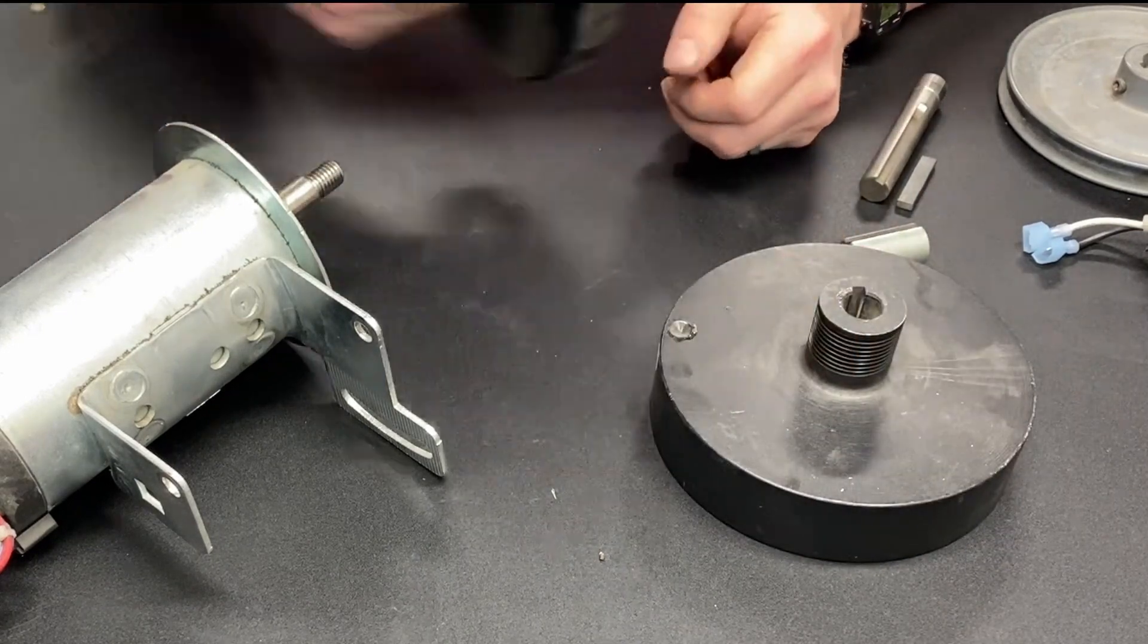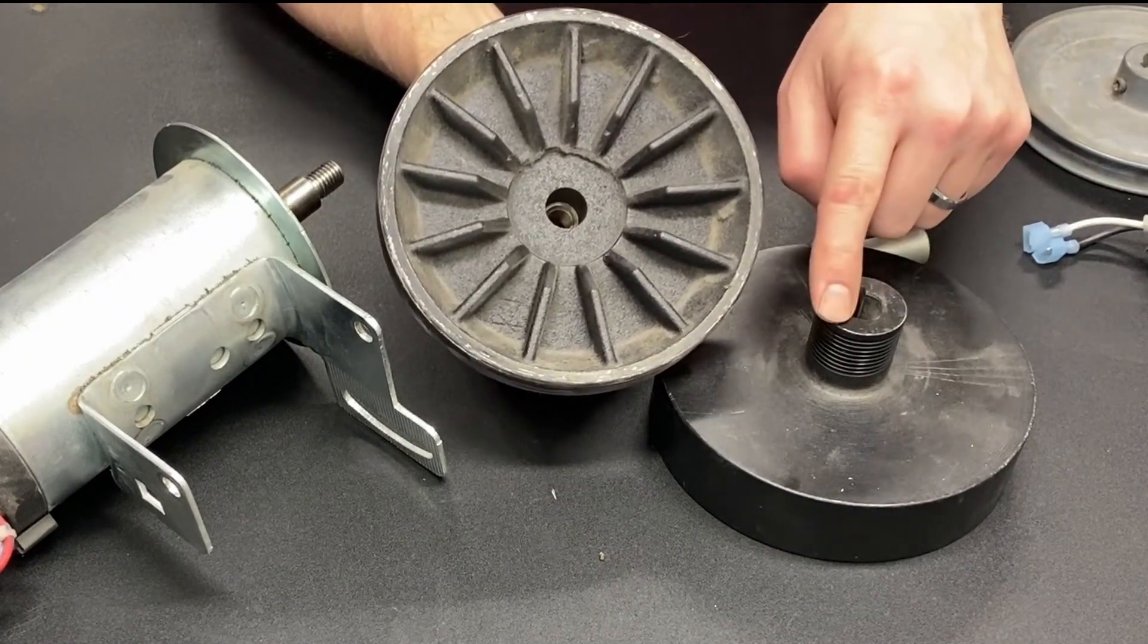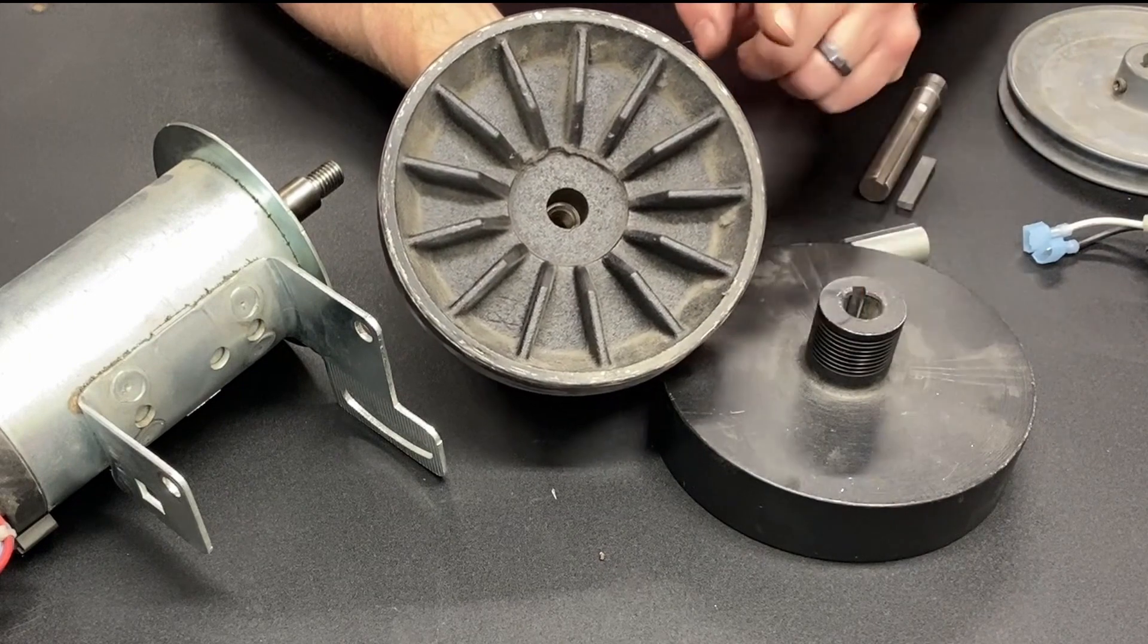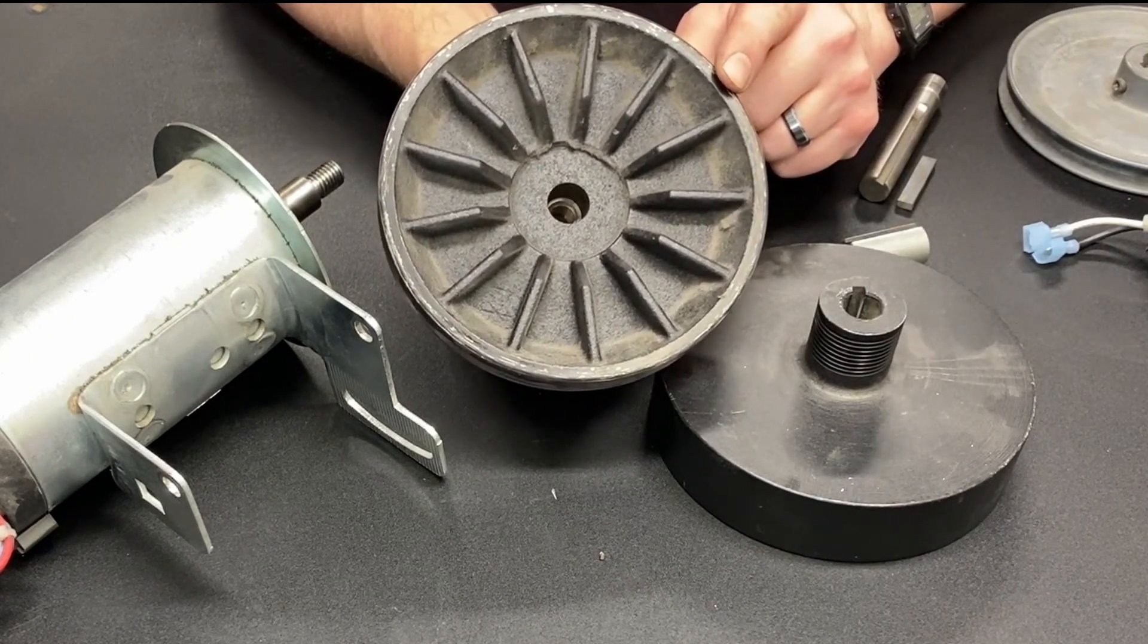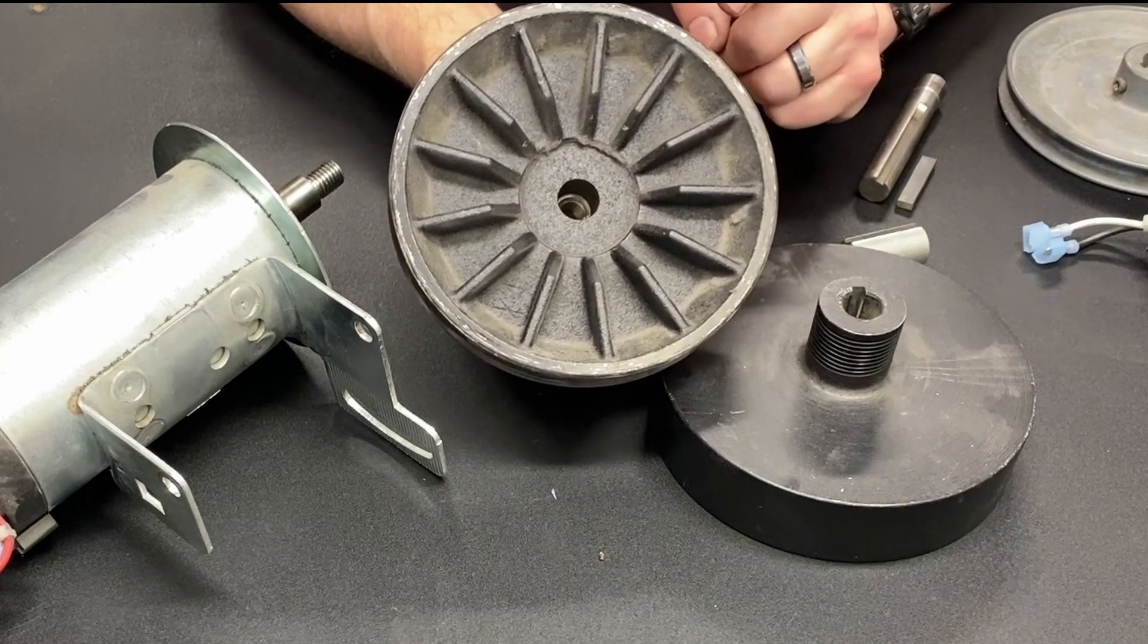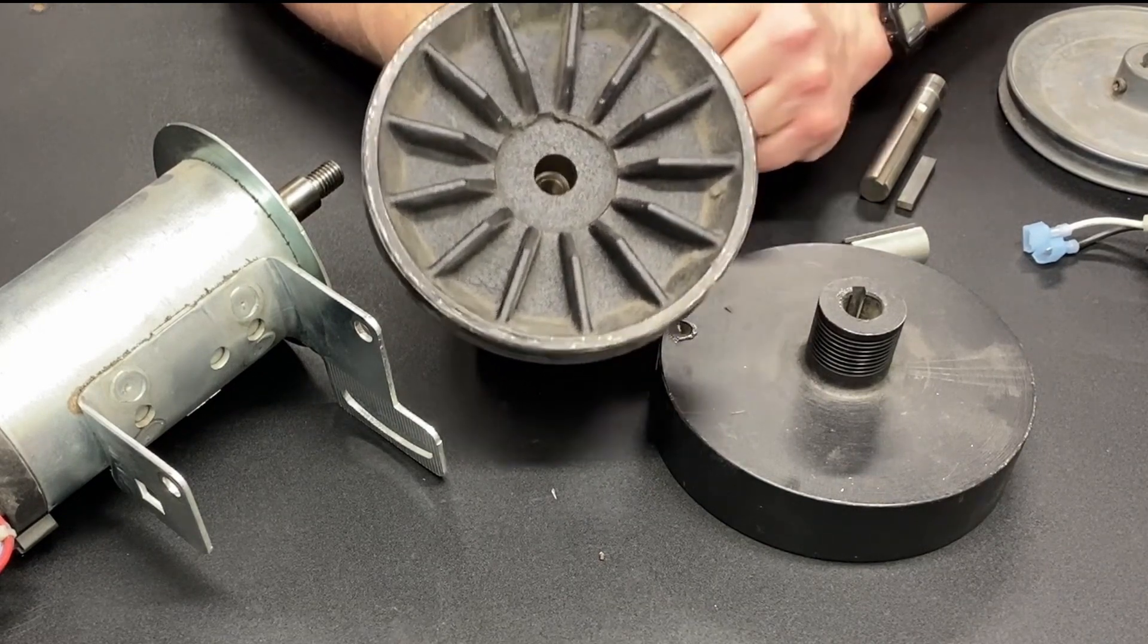This one is also the cooling fan. So the motor that this came off of had its own cooling fan. In a situation like this, either you have to replace this with a cooling fan, or you have to run it. Those are the only two options.